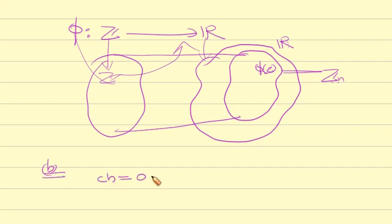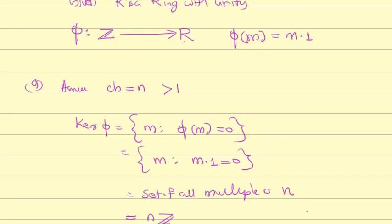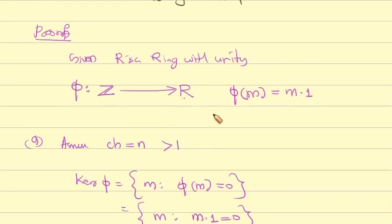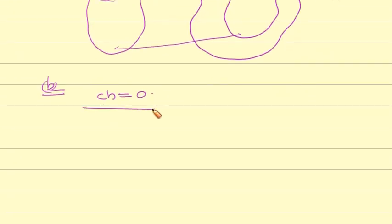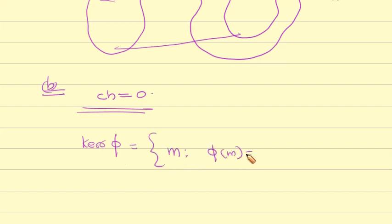For Part B: assume CH equals 0. The kernel of φ equals the set of all m such that φ(m) equals 0, that is m times 1 equals 0. Since the characteristic is 0, the only such m is 0, so the kernel equals {0}, which is 0Z.